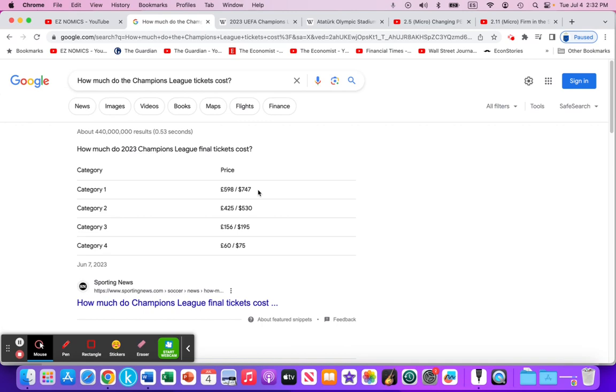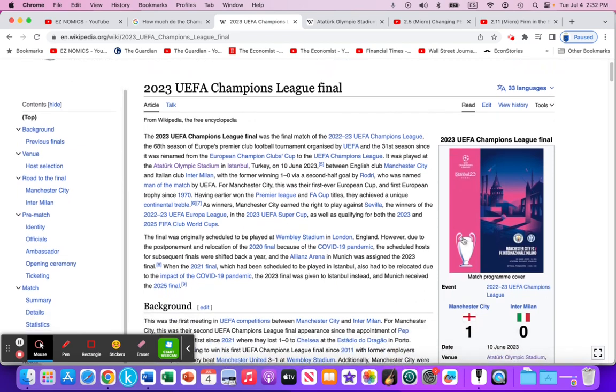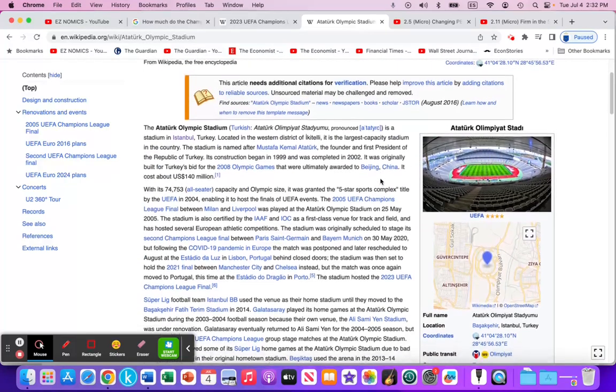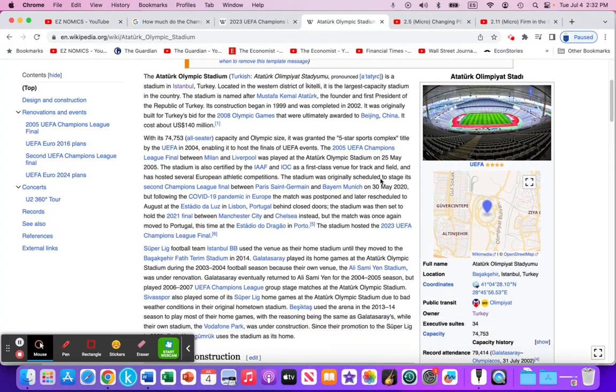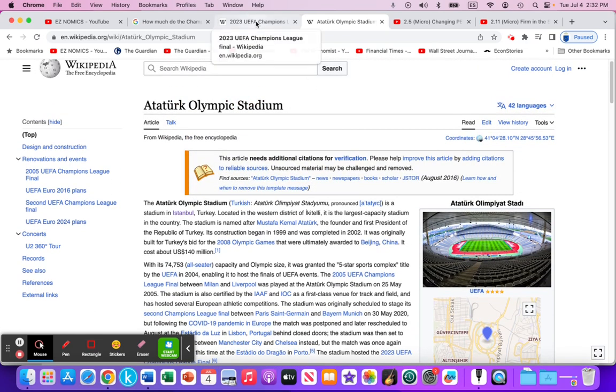This took place, again, this was the 2023 UEFA Champions League final, Manchester City versus Inter Milan at the Atatürk Stadium. And the stadium capacity is about 74,000, with a record attendance of 80,000. And I think for this particular game, there was about 75,000 people in attendance approximately.